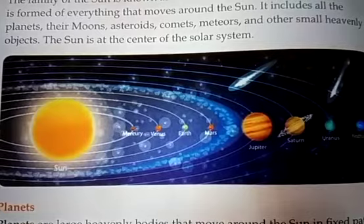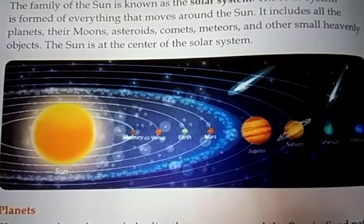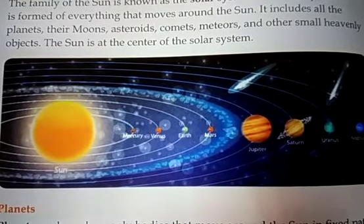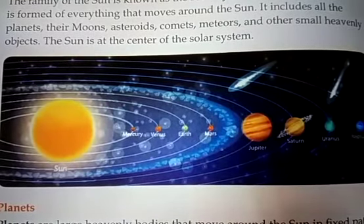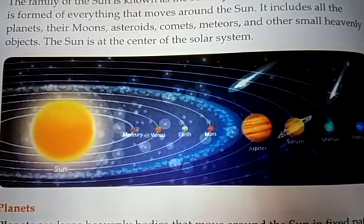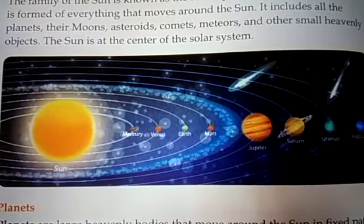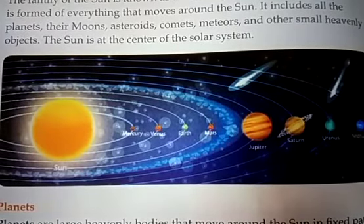The sun is a huge ball of burning gases. It gives out heat and light. It is the brightest object in the sky. The sun is a star and has a light of its own. It is the star closest to the earth.